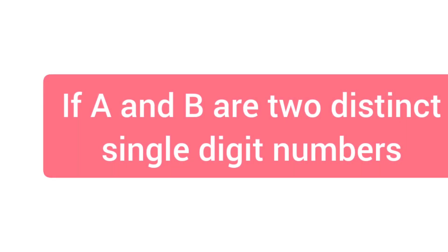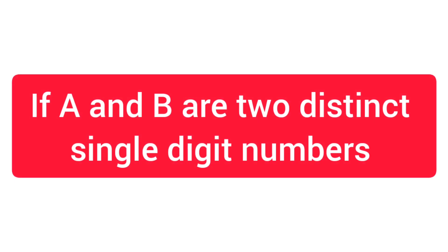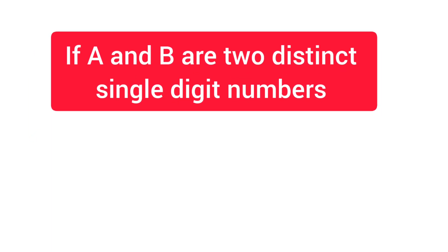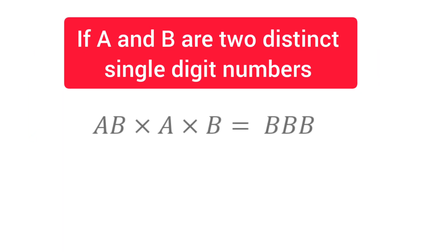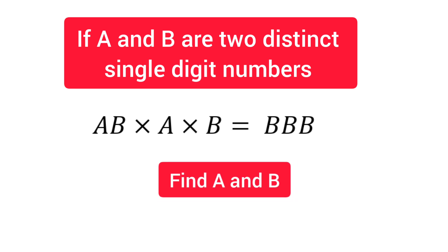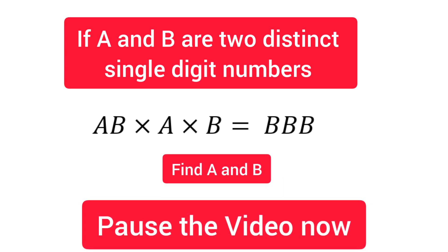If A and B are two distinct single digit numbers and AB times A times B equals BBB, then find those two digits A and B. If you are interested to solve this cryptarithmetic problem, you can pause this video now and try to solve.